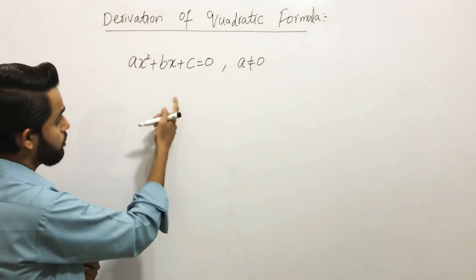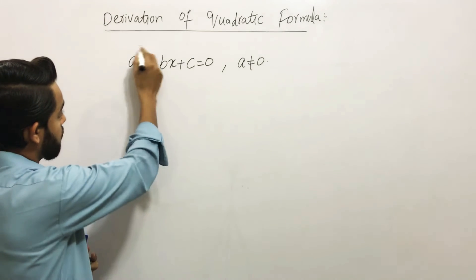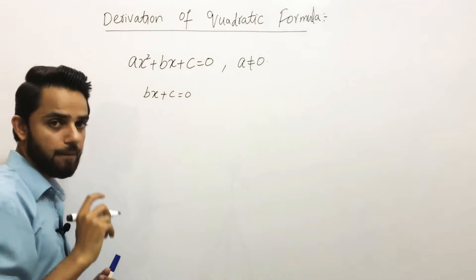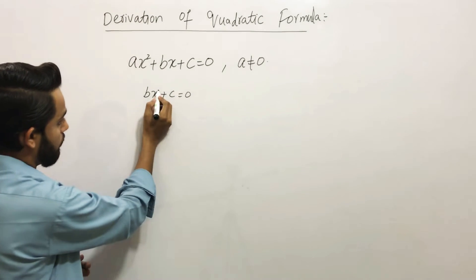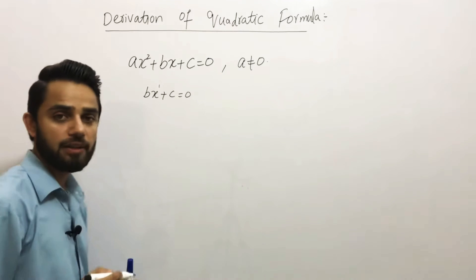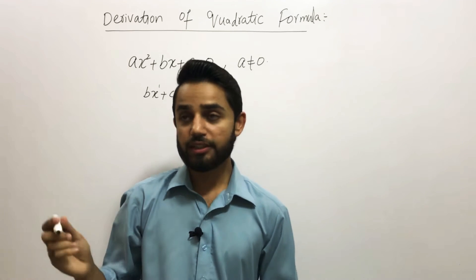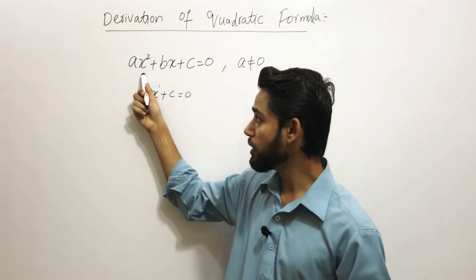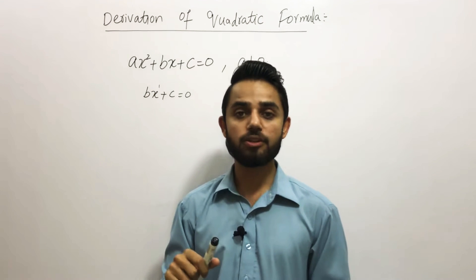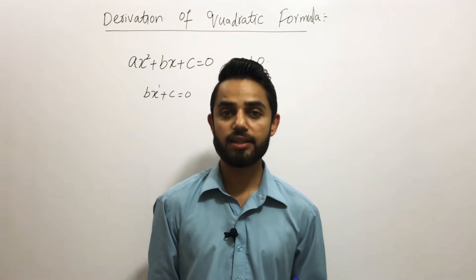If a is going to be 0, this whole term becomes 0 and you are left with only bx + c = 0. The power of the variable here is 1, which means it is linear. So if a equals 0, the quadratic equation transforms into a linear equation. That is why it is very important to understand why a must not equal 0.